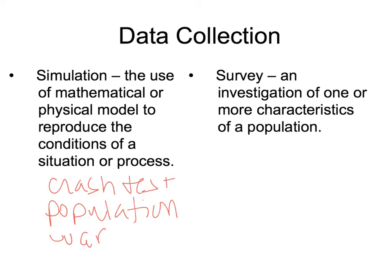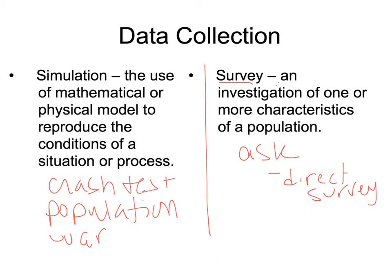In war, they simulate trajectories — if shooting a missile, they use simulations to see if they'd hit the target. A survey is the method we see more commonly: it's an investigation of one or more characteristics of a population. You're simply asking people. It could be a direct survey, a phone survey, or a mail survey — many different methods, but it's asking, not simulating.